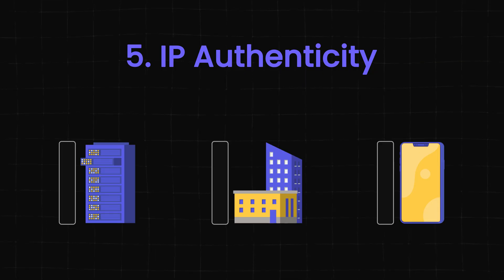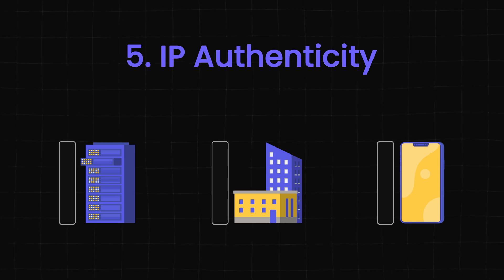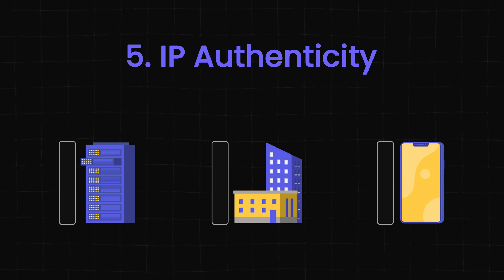Take data center proxies for example — looking up a data center IP will tell you that it's a commercial connection, which makes most websites put up their guard, so you'll be able to get away with less because you're already being scrutinized. Residential proxies have a higher trust factor for the reasons we've discussed. However, websites already know that most proxy users will prefer residential proxies, so if you're using a residential IP that's been flagged before, the site's guard will also be up.